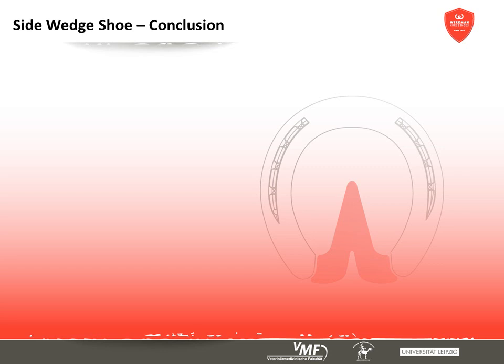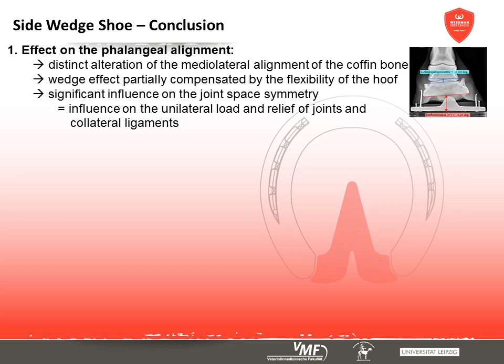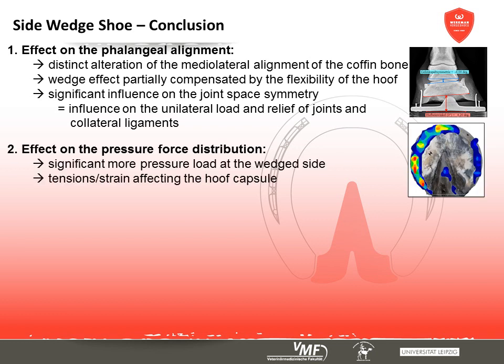Summing up, the application of a side wedge shoe offers the following effects. Especially on hard ground, we can observe an alteration in the alignment of hoof and coffin bone towards the ground; however, part of this wedge effect is compensated by the flexible architecture of the hoof. The effect on the interphalangeal joint space symmetry is significant, and the unilateral effect on joints and collateral ligaments should be judged critically. To reduce the danger of overload and secondary pathologies, a temporarily limited application is recommendable, especially since the wedged half of the hoof experiences massive additional load and because unrollment over the elevated side is harder.